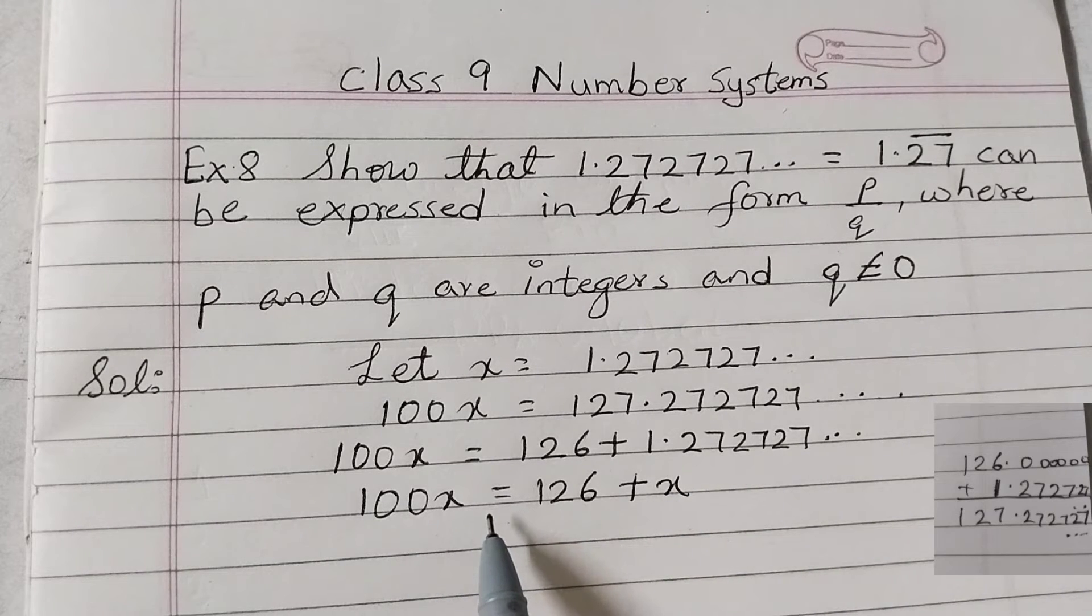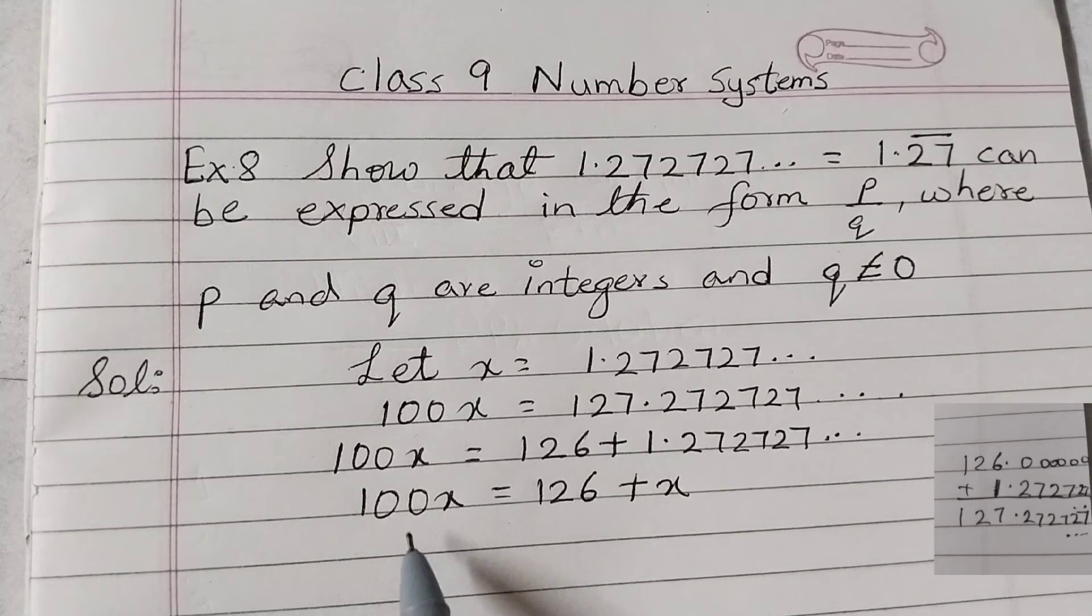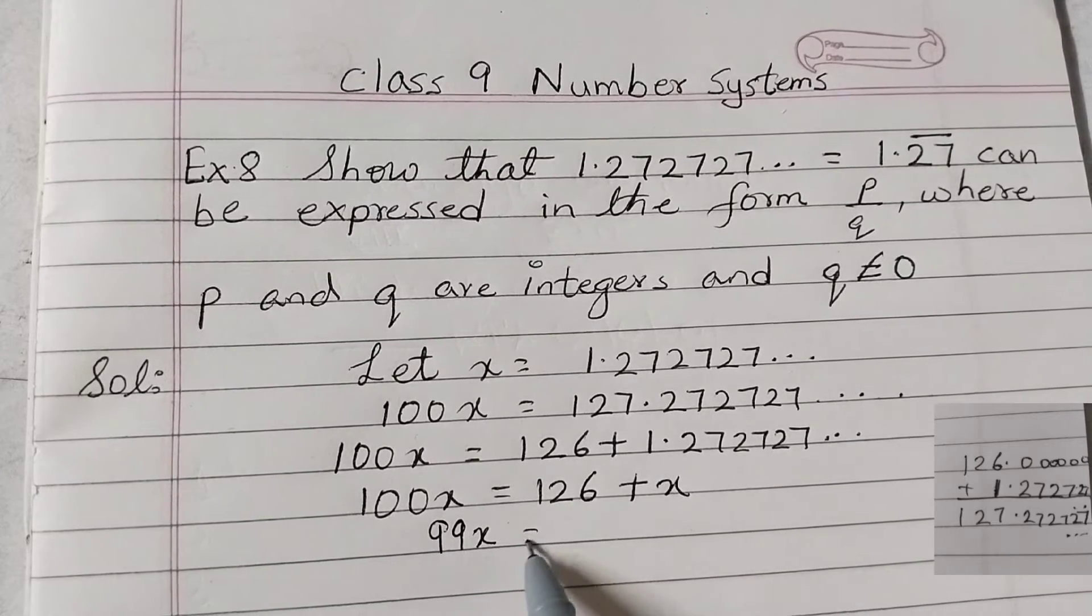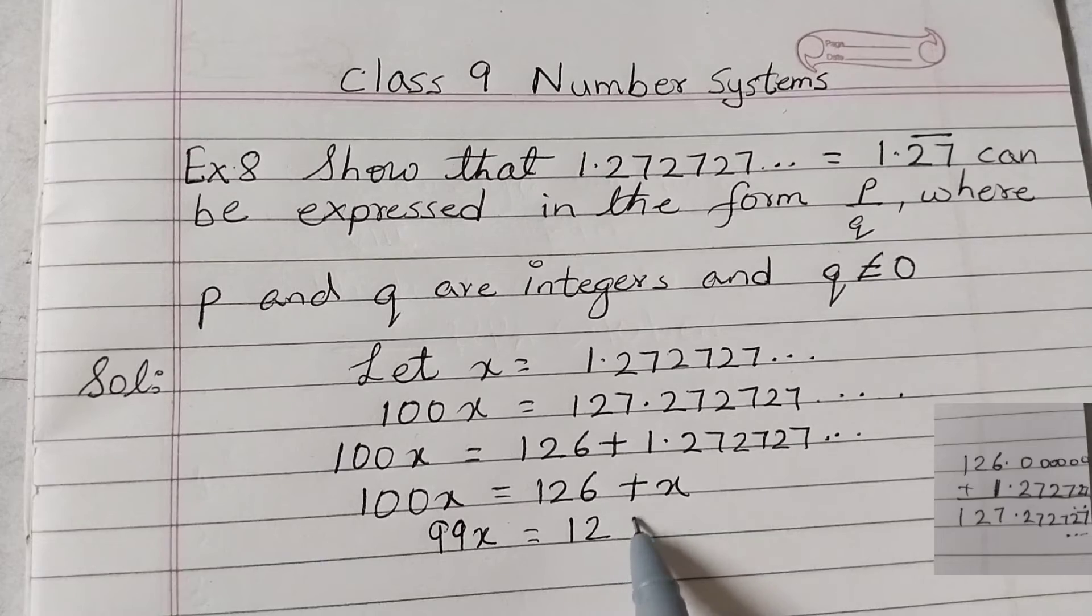Now get x on the left hand side, so 100x minus x will be 99x equals 126.